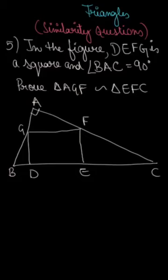Okay guys, question number 5. In the figure DEFG is a square and angle BAC is 90 degrees. Prove that triangle AGF is similar to triangle EFC.